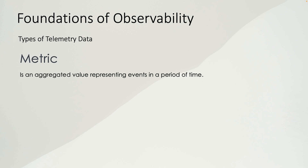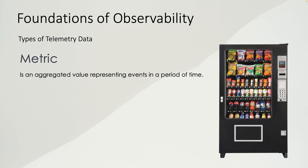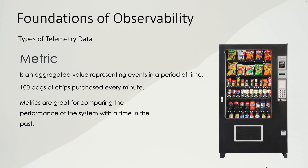An event in a vending machine shows that somebody purchased a bag of chips, but it doesn't show how many bags of chips were purchased within a minute. That is where metrics come into play. A metric is an aggregated value representing events over a period of time. For example, 100 bags of chips were purchased every minute.